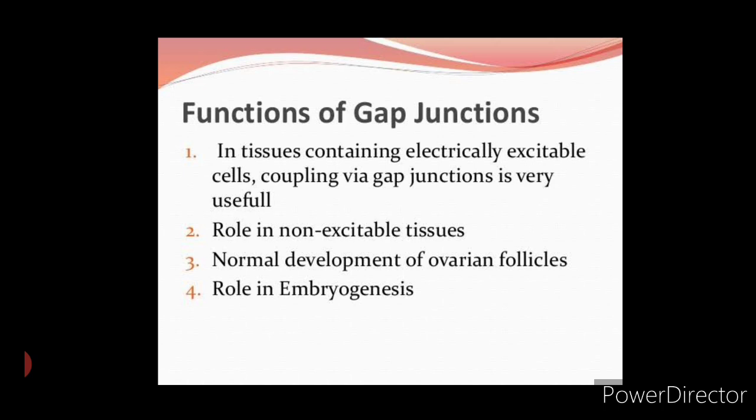Second, in cardiac muscle and in the synapses of neurons, the gap junctions are related to conduction of electrical signals between the cells. Third, there is a passage of metabolites such as nucleotides, sugars, vitamins, etc. from one cell to another.